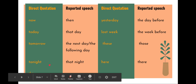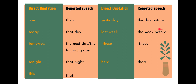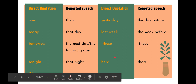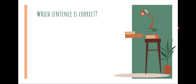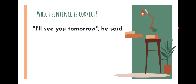Now changes to 'then.' Today changes to 'that day.' Tomorrow changes to 'the next day' or 'the following day' — both are correct. Tonight changes to 'that night.' This changes to 'that.' Yesterday changes to 'the day before.' Last week changes to 'the week before.' These changes to 'those.' Here changes to 'there.'